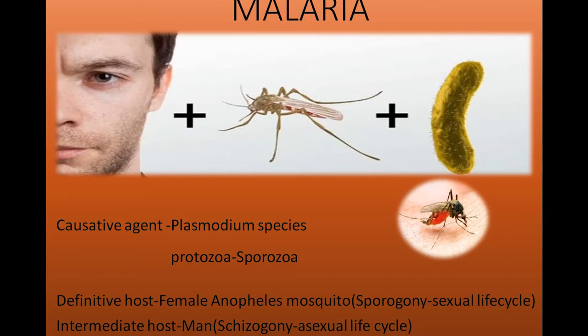We have many plasmodium species which can lead to malaria infection. This parasite comes under the protozoan category, under sporozoans. Plasmodium species belong to sporozoa under the protozoan category in parasitology. This malaria parasite completes its life cycle in two different hosts.